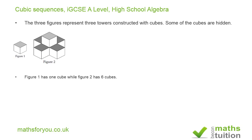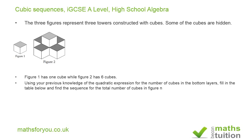Figure one has one cube while figure two has six cubes. You can see that figure two has five cubes at the bottom layer and one on top making it six. Using your previous knowledge of the quadratic expression for the number of cubes in the bottom layers, fill in the table below and find the sequence for the total number of cubes in figure n.